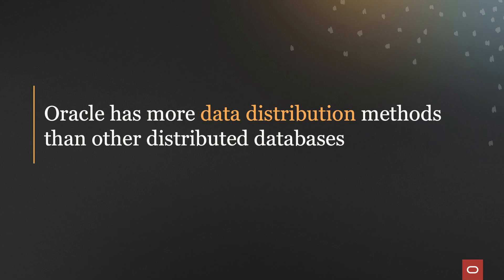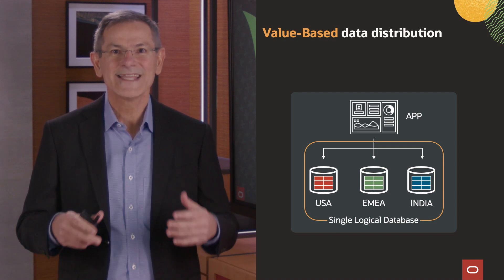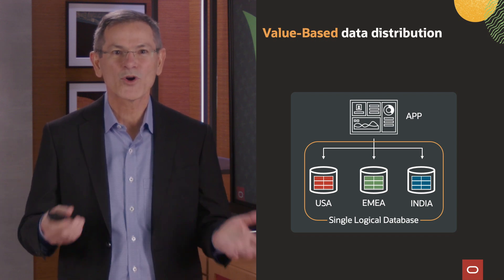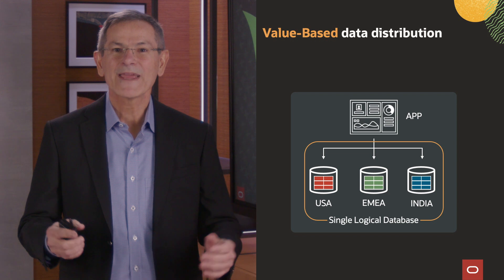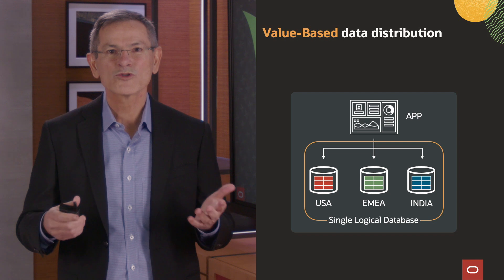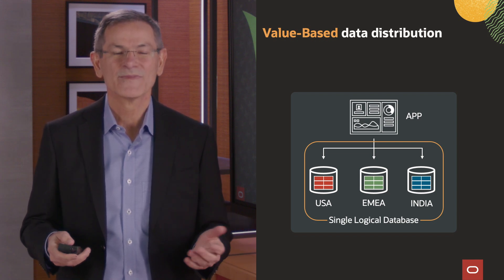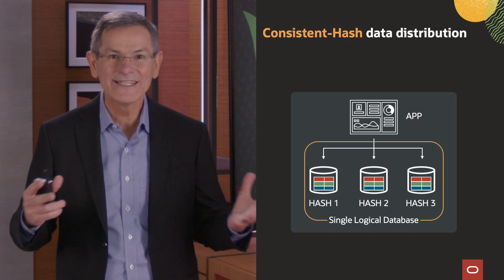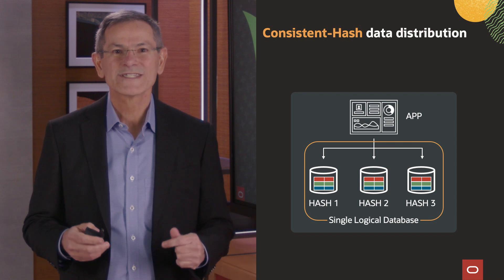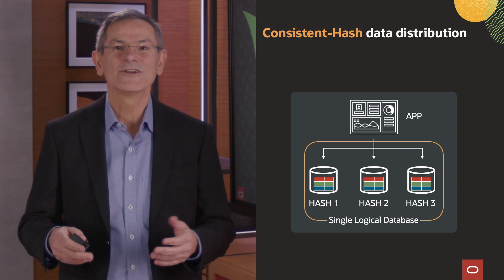Oracle has more data distribution methods than other distributed databases, and data distribution methods are critical for distributed databases. Oracle supports value-based data distribution, which distributes data by value — for example, by country or by product. It also lets you distribute data by a range of values, for example a range of phone numbers. In addition, Oracle supports system-managed data distribution, which uses consistent hash to evenly distribute data across shards for scalability and parallelism — for example, to distribute data by customer ID, device ID, or action ID.